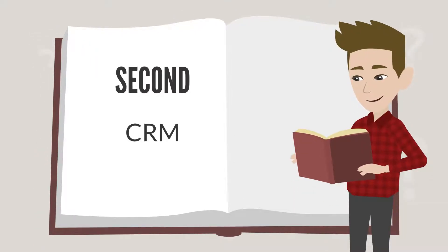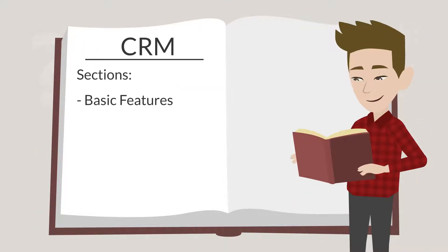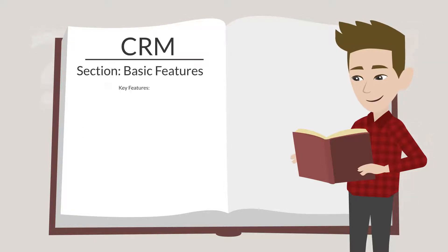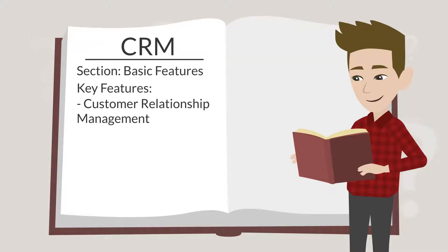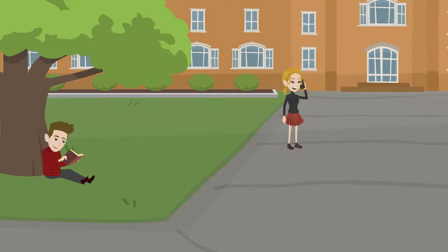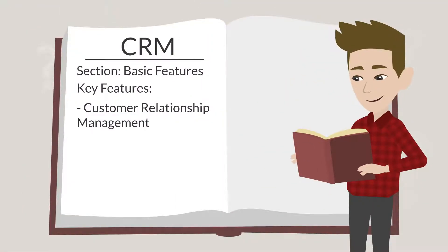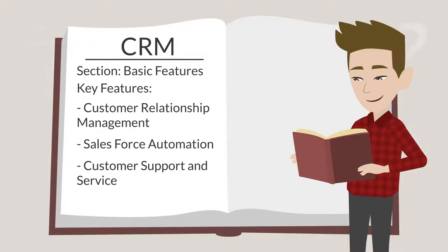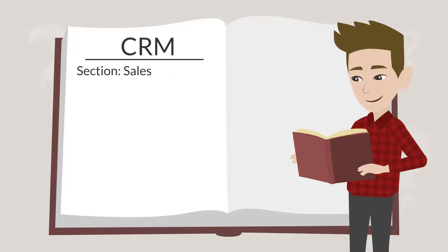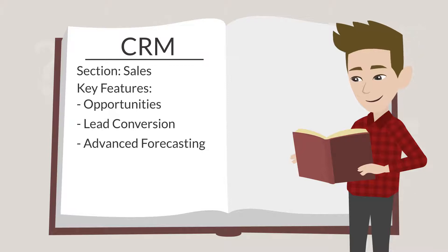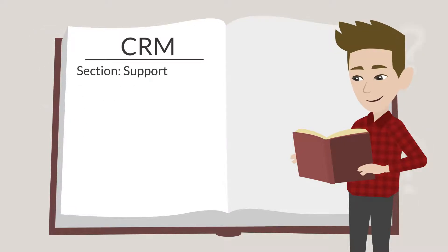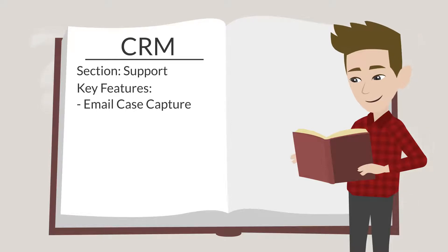Next up is the CRM subtab. This tab has five sections: Basic Features, Sales, Support, Marketing, and Partners. The Basic Features section has the feature Customer Relationship Management, which enables you to manage everything related to customers, from your calendar to contacts to events and tasks. This feature is perhaps the most important of all the CRM features. Other basic features include Salesforce Automation, Customer Support and Service, and Marketing Automation. The Support section includes customer service types of features, like Email Case Capture, converting emails directly into cases, and Knowledge Base for building FAQs.